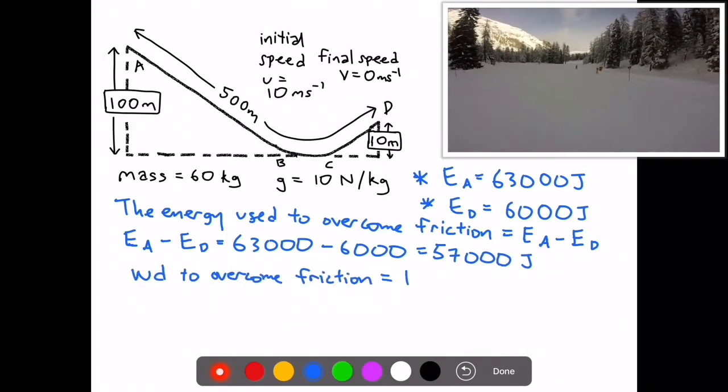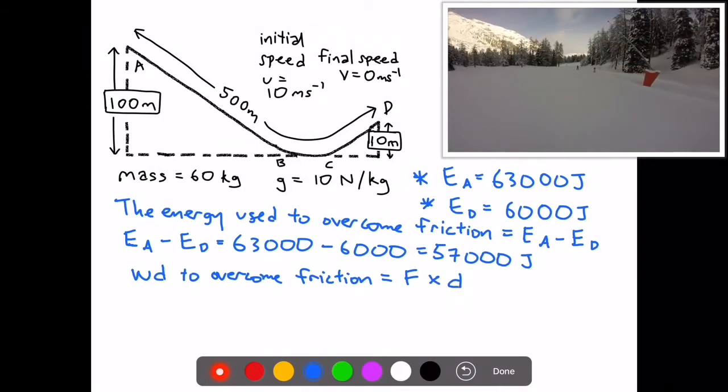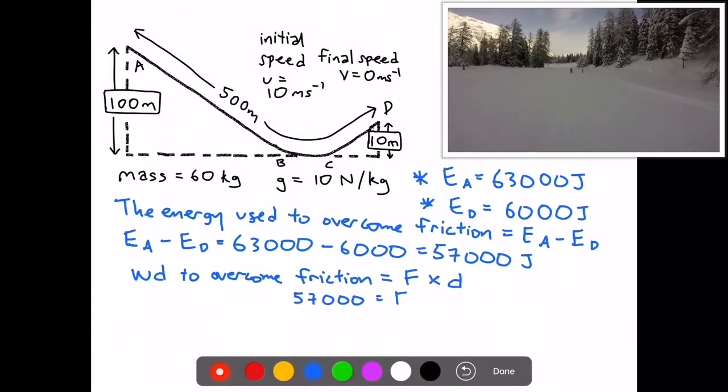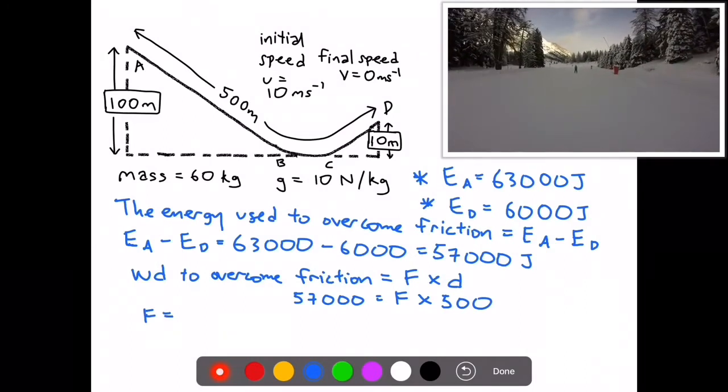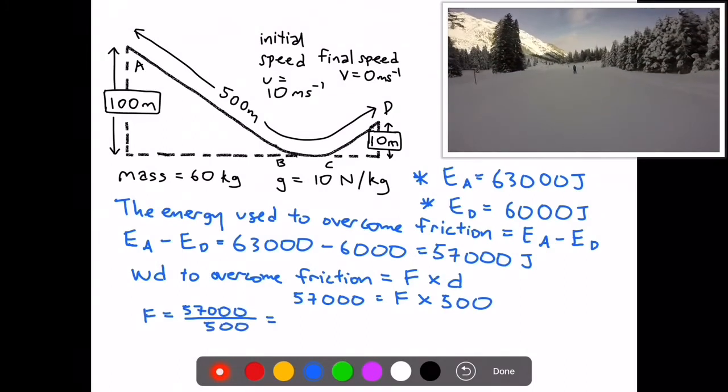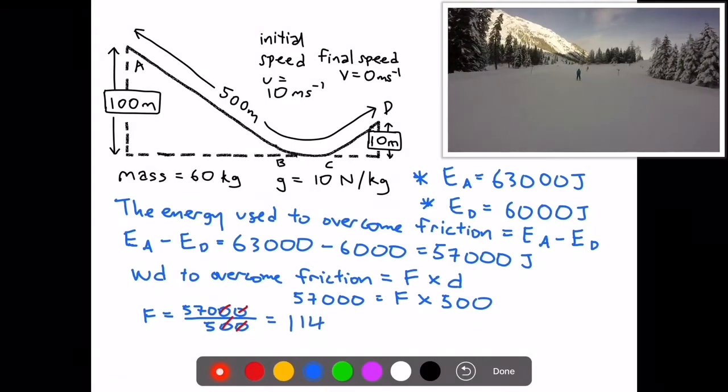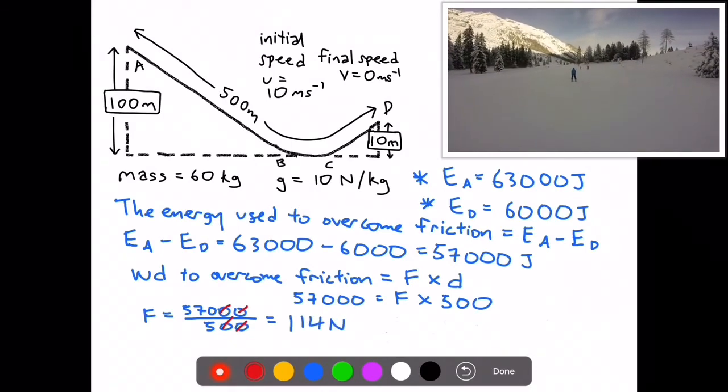So the work done to overcome friction will be equal to F times D. So 57,000 Joules will be equal to the force times 500 meters distance. So the frictional force will be equal to 57,000 divided by 500, which gets you 114 Newtons.